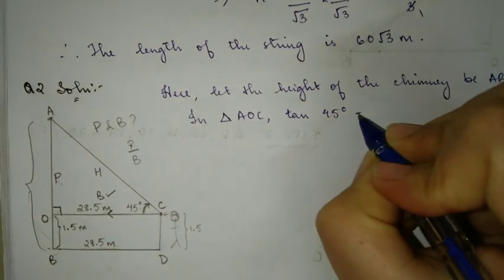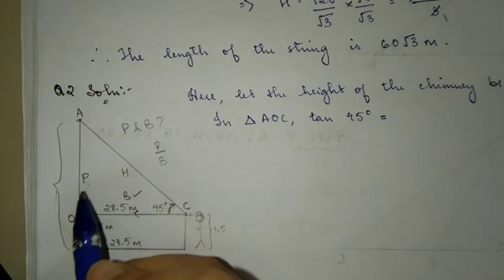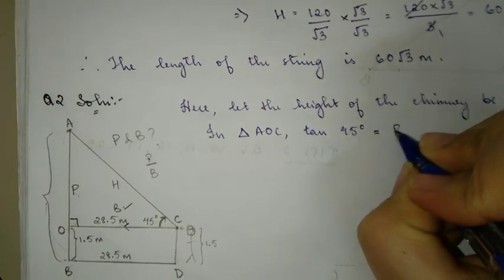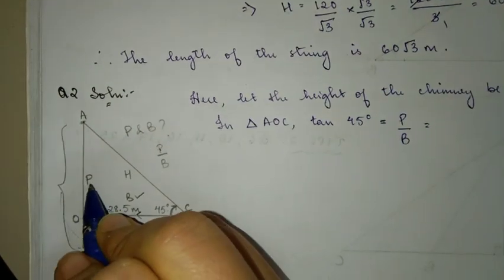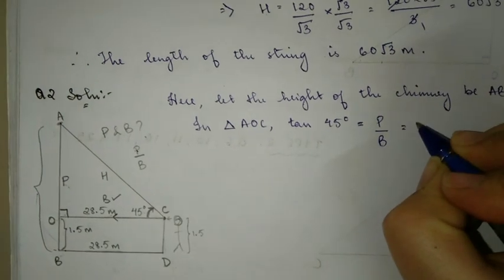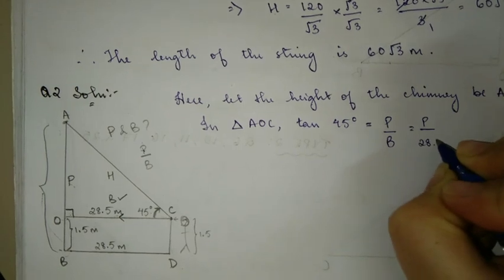In triangle AOC, tan 45 degrees is equal to - now tan theta formula is P by B. So we have P by B. Now we want to find P, we already know B, so we're going to substitute 28.5 instead of B.